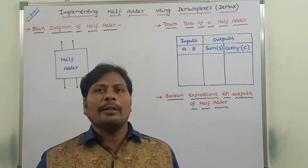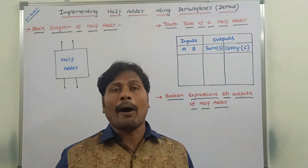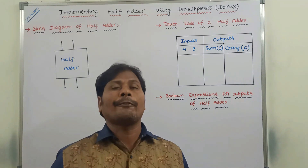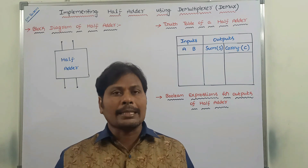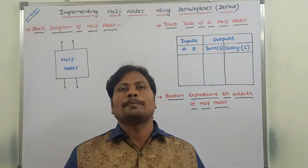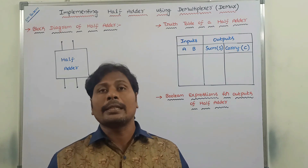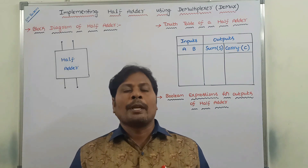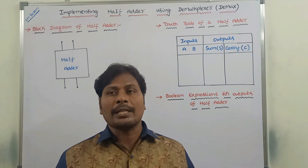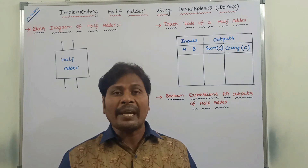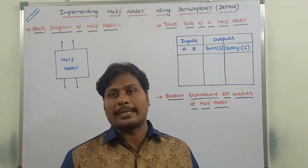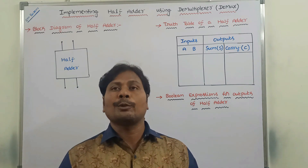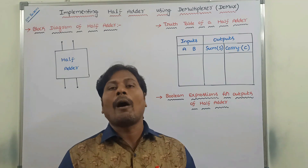First of all, we have to know about what is a half adder, what is the block diagram of half adder, and what is the truth table of half adder. Once we know these things, after that we will discuss how to implement half adder using demultiplexer. Half adder is a combinational circuit that is used for performing the addition operation between two bits.